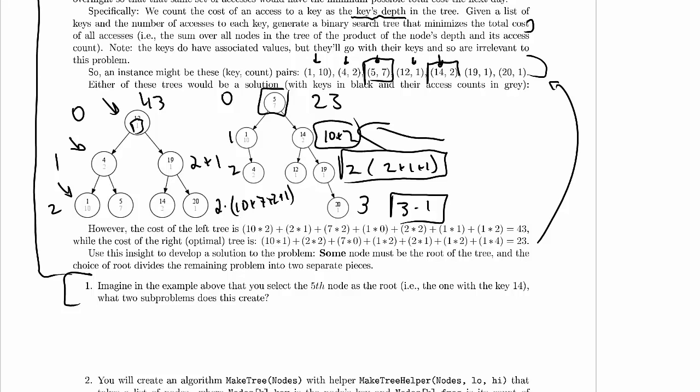Well, we've selected this node as the root, then only 19 and 20 can go on the right, and only 12, 5, 4, and 1 can go on the left.